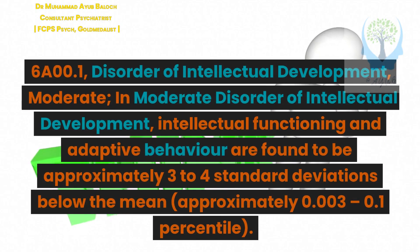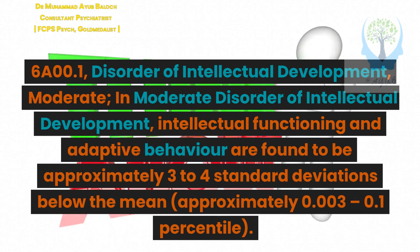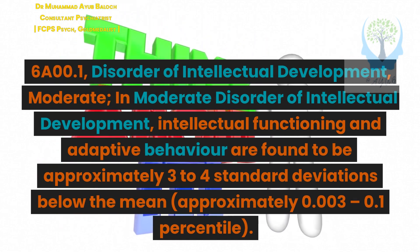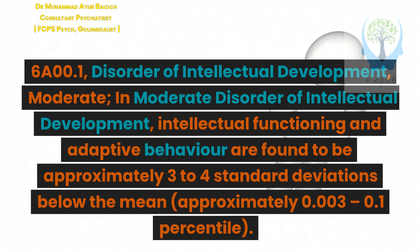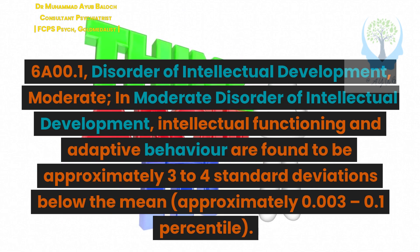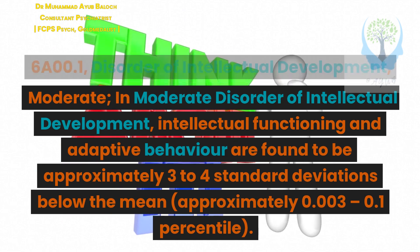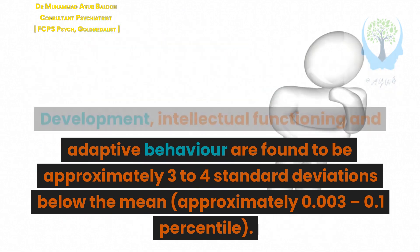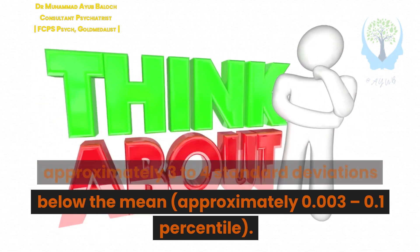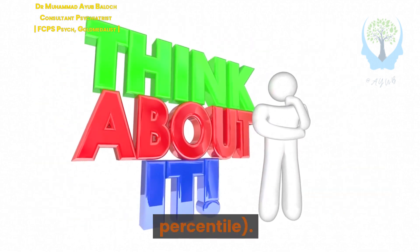6.A.00.1 Disorder of Intellectual Development, Moderate. In Moderate Disorder of Intellectual Development, intellectual functioning and adaptive behavior are found to be approximately 3 to 4 standard deviations below the mean, approximately 0.003 to 0.1 percentile.